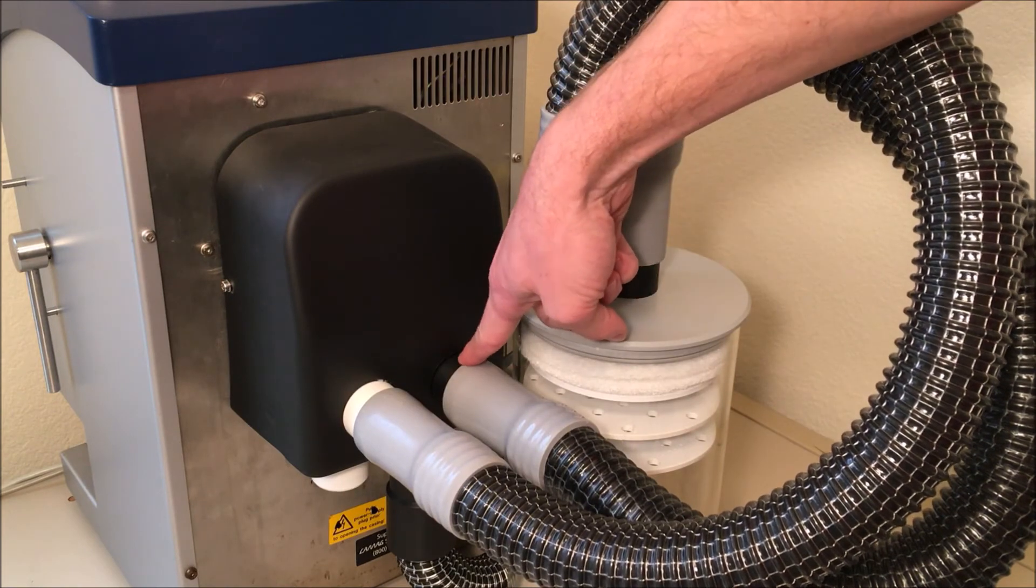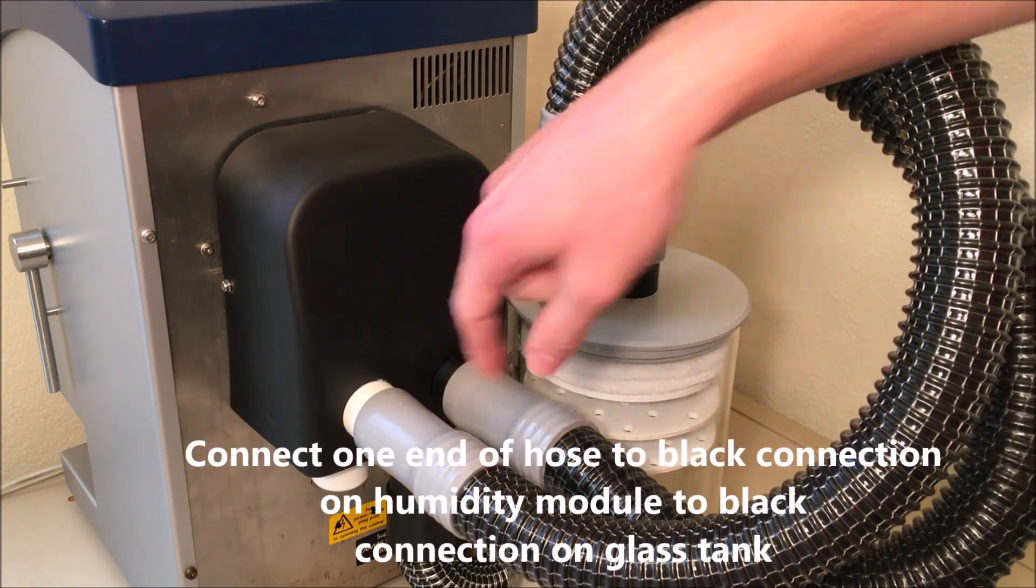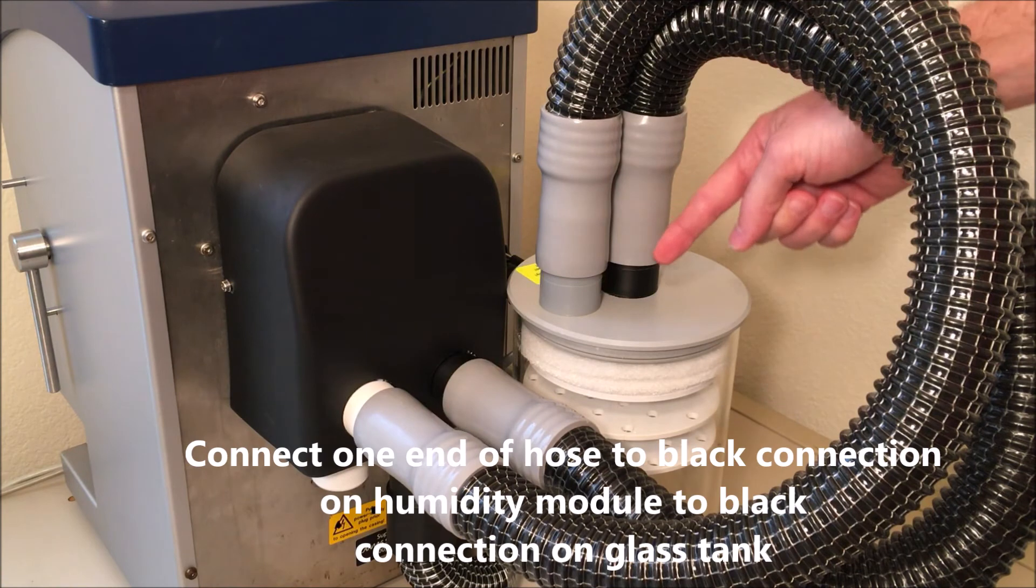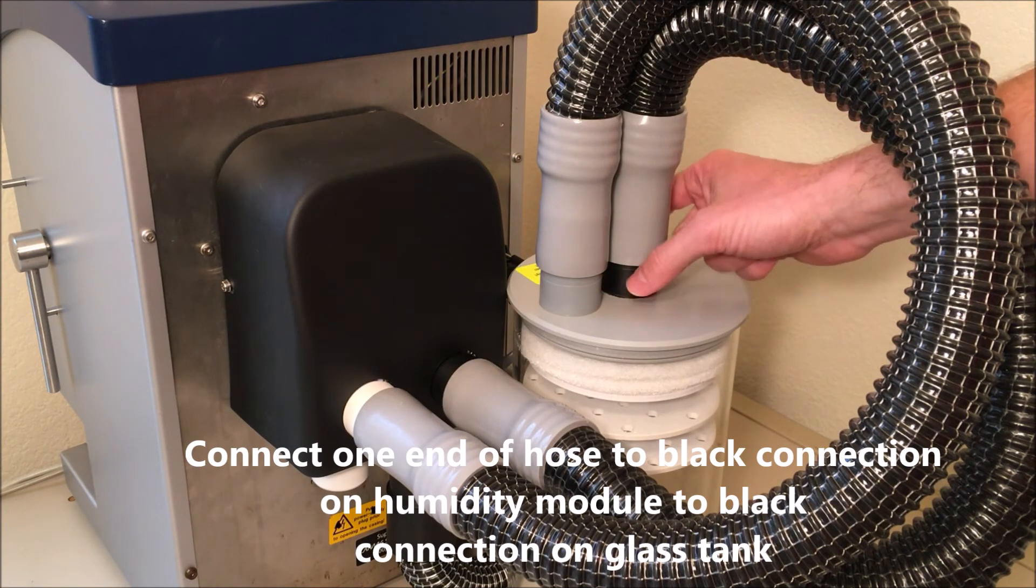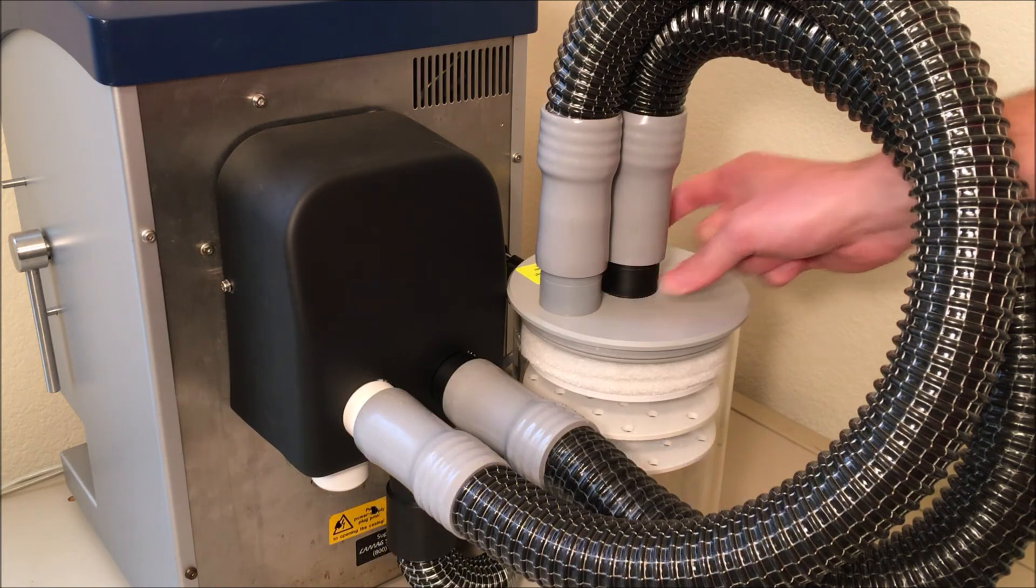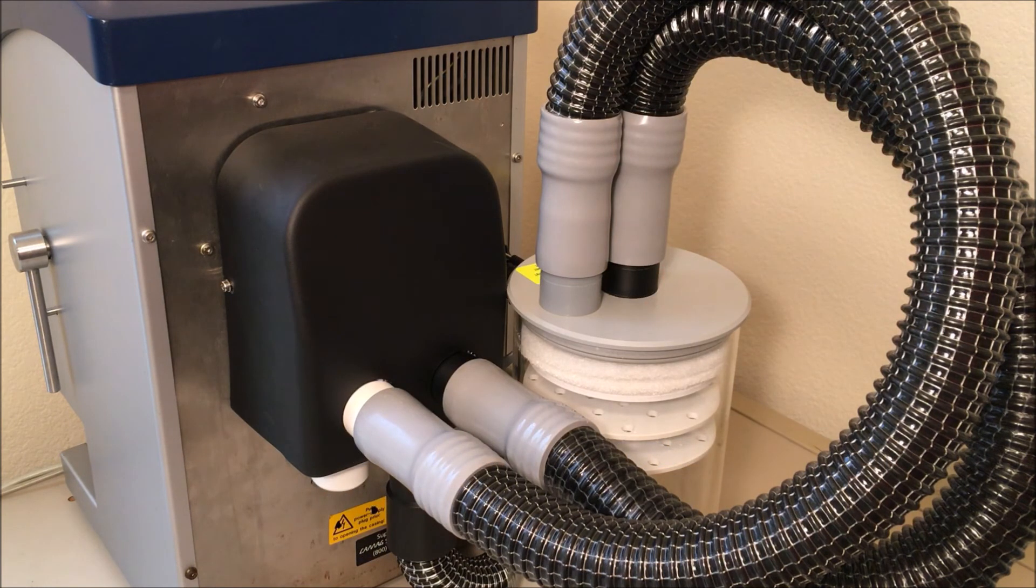Then the right tube which is the black connection would then be connected to the container with magnesium chloride on the black connection, usually the center connection here. So you can see that it's actually quite easy to just match up the colors and that's how you know you've properly connected the tubing.